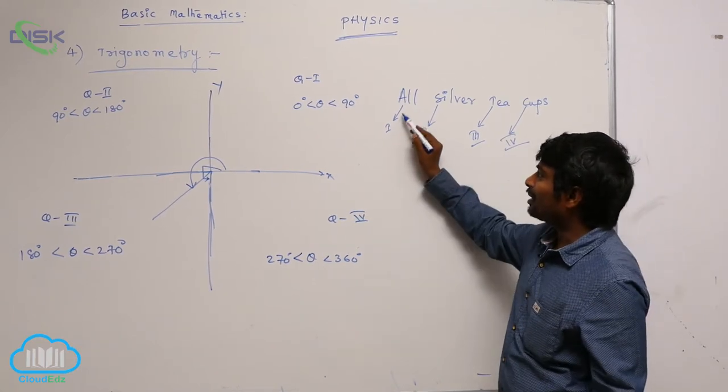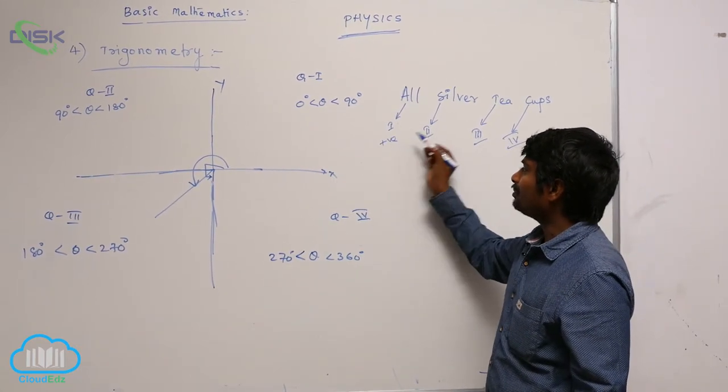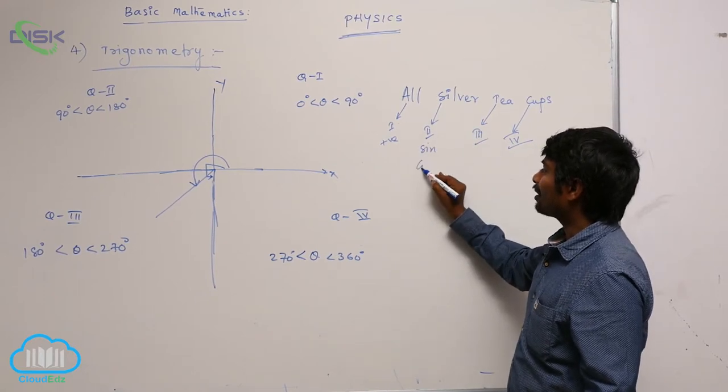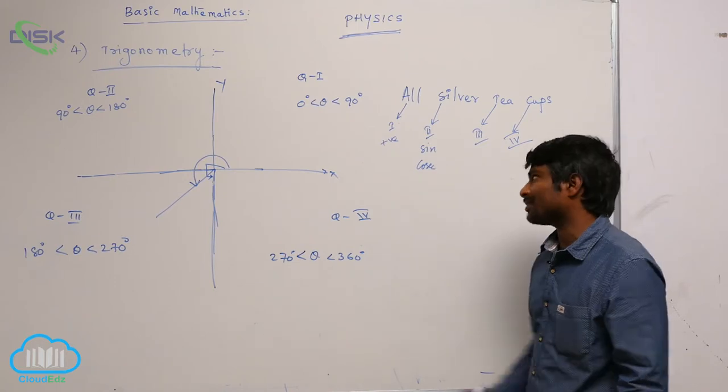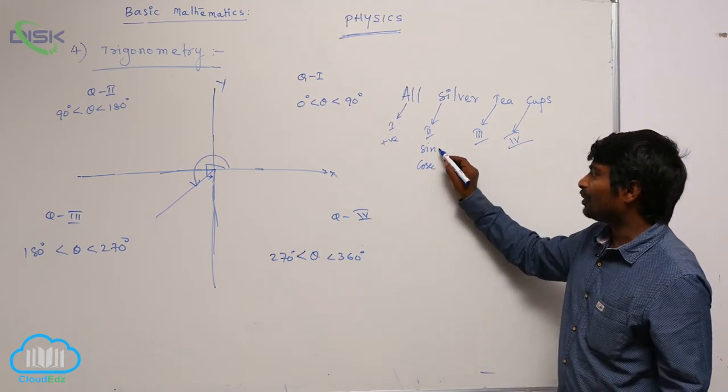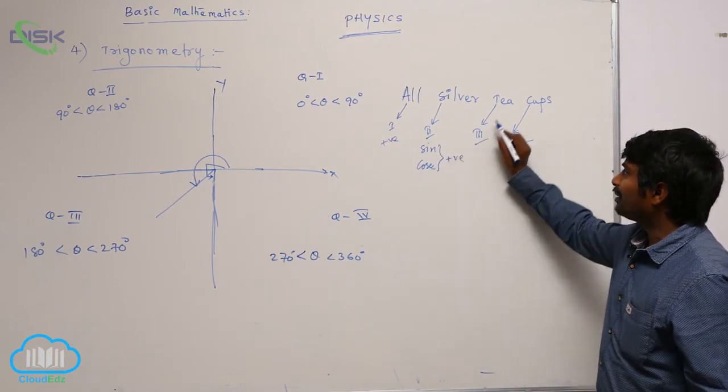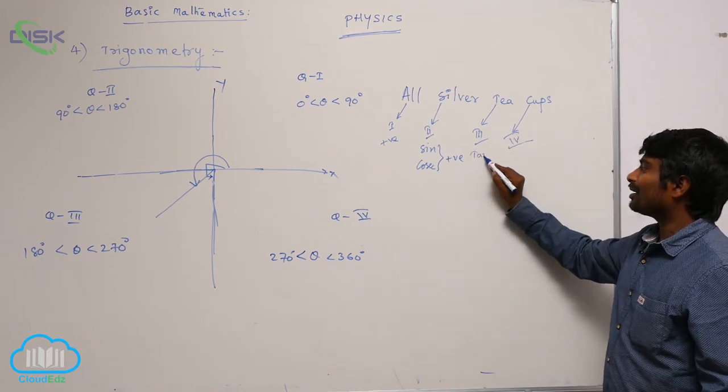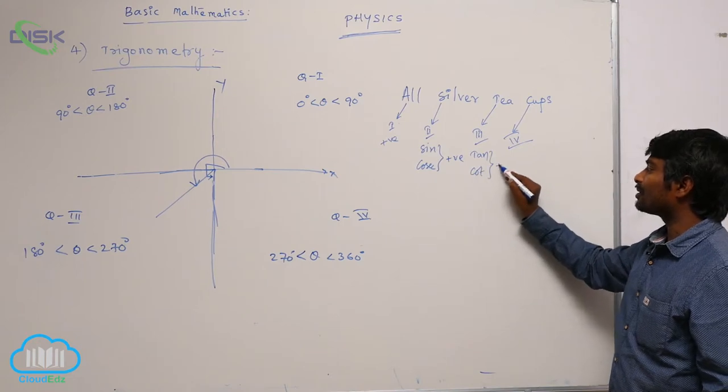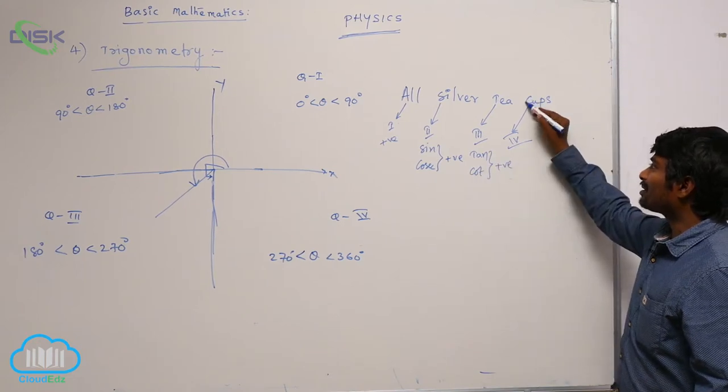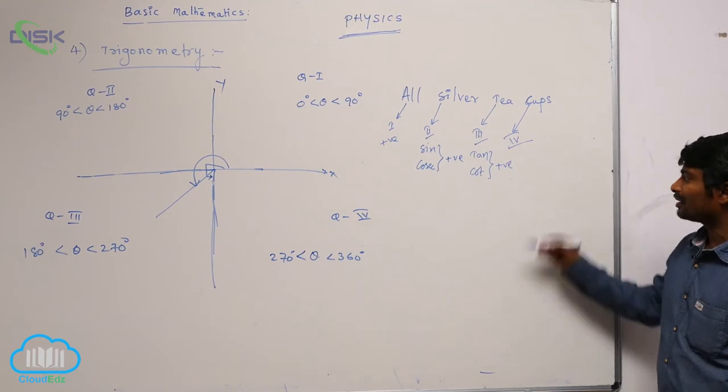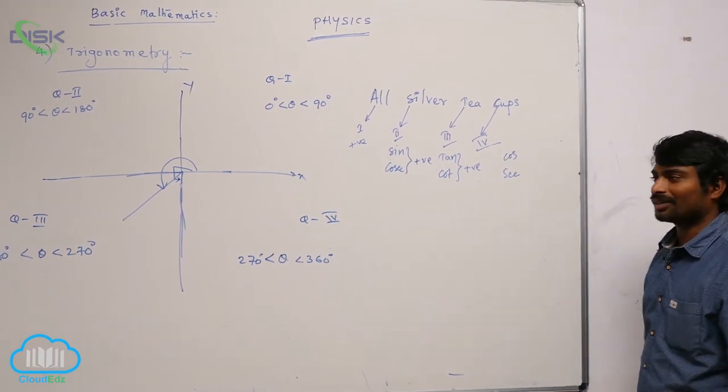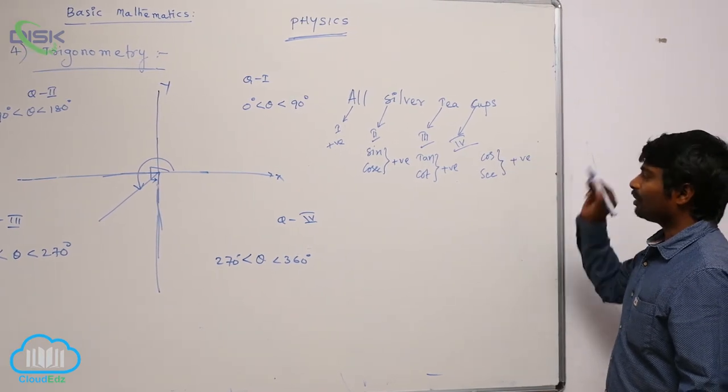In the first quadrant, all are positive. In the second quadrant, only sin or cosecant, because cosecant is the reciprocal of sin. These two are positive. In the third quadrant, T for tan, so tan and cot are positive. In the fourth quadrant, C for cos, so cos and secant are positive.